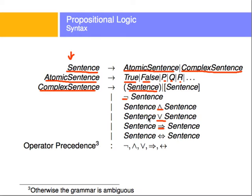We'll see how this grammar can be turned into a tree where the terminals are leaves and the non-terminals are nodes. When generating or parsing expressions using this grammar, operator precedence becomes useful — it's helpful to know which operators take precedence. I'll use abbreviations: S for sentence, AS for atomic sentence, CS for complex sentence, and so on.